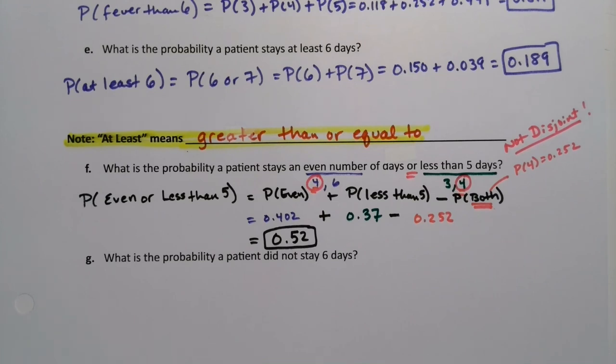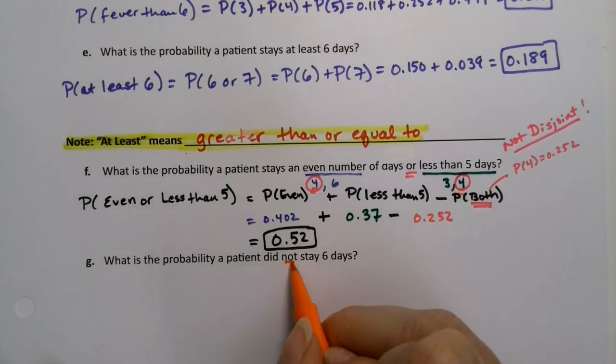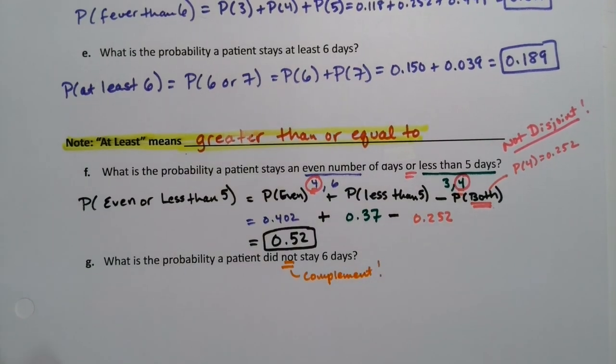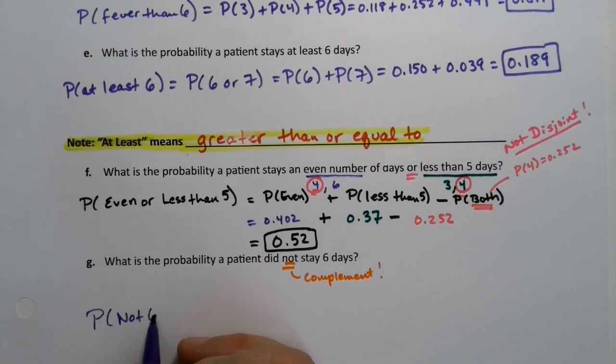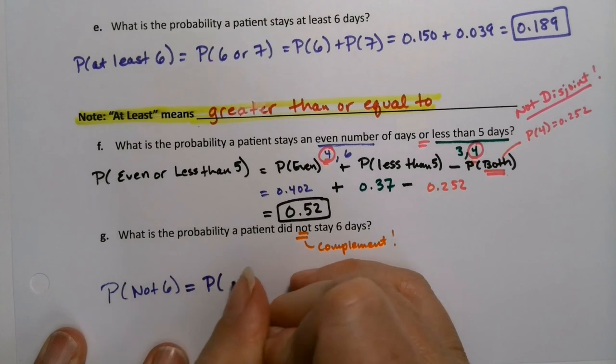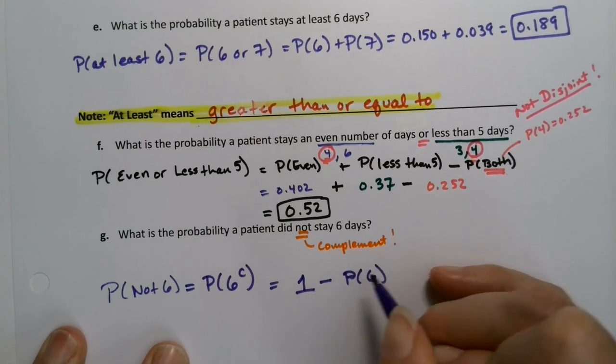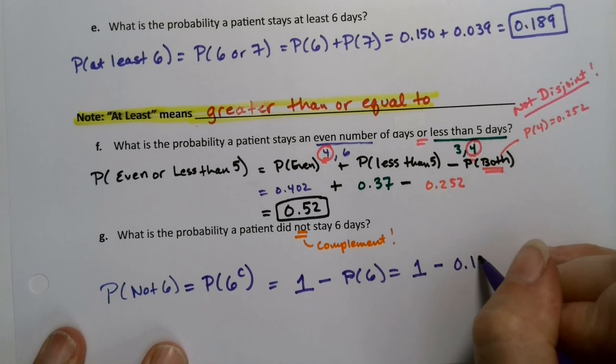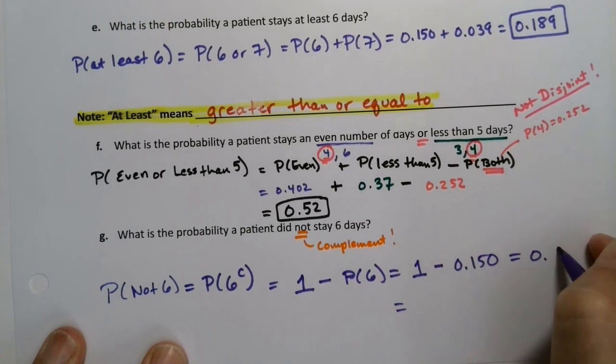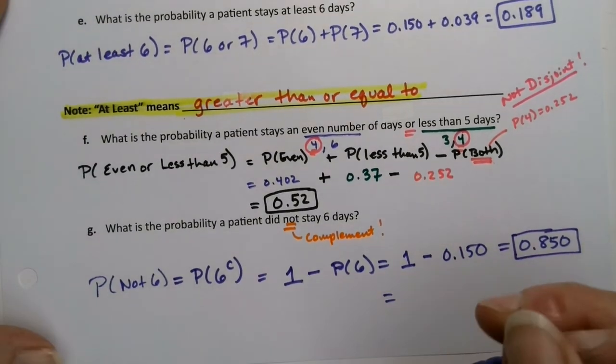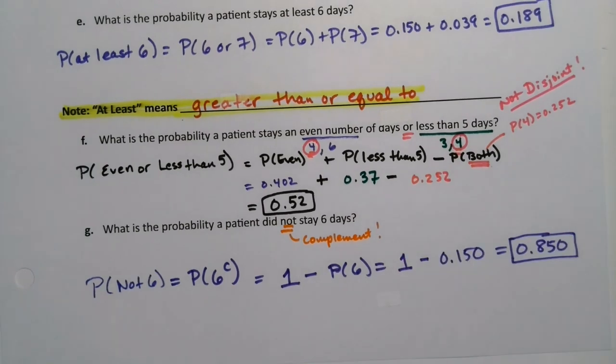Last but not least, letter G. What is the probability a patient did not stay 6 days? There's a special word in there: not. That not is key because that means we're going to be using complement. If I want the probability of not staying 6 days, that's the same thing as the probability of 6 complement, which according to the complement rule is 1 minus the probability of 6, which would be 1 minus 0.150. So that would be 0.850.